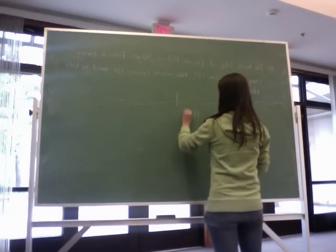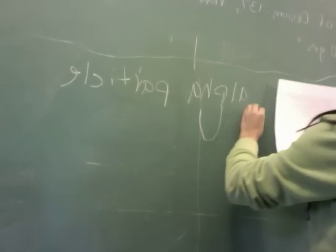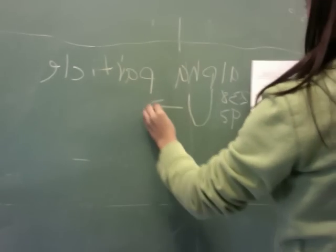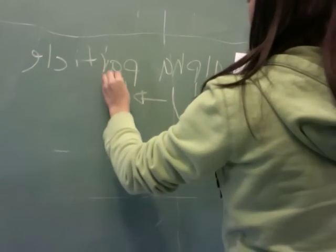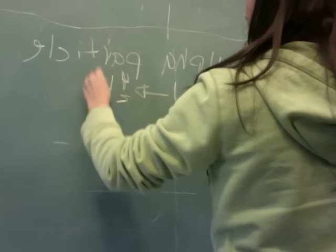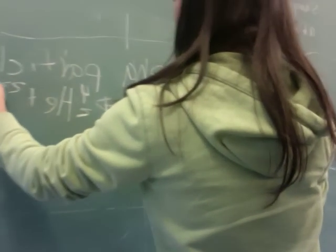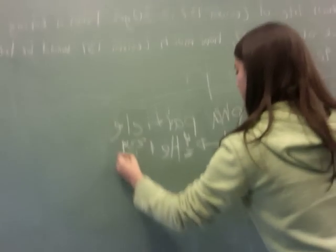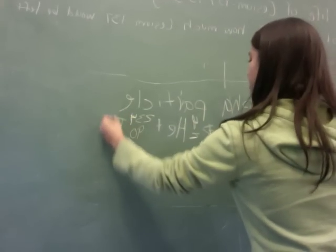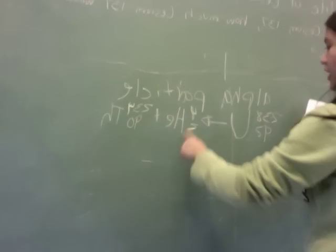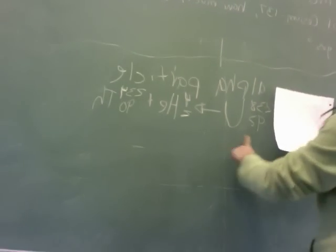Alpha particle is uranium 238 over 92. You add the 4, this makes 238, and then you add the 2 to 90, making it 92, so they're both equal.